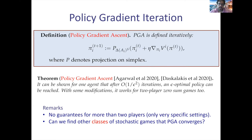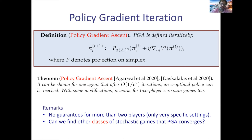Until recently, there were no guarantees for more than two players except for very specific settings. In particular, suppose you have an N-agent stochastic game but all agents receive the same reward at every state-action pair — effectively you have only one agent. This was the only scenario that was known, and this was our motivation: can we find other classes of stochastic games with provable guarantees for policy gradient ascent?